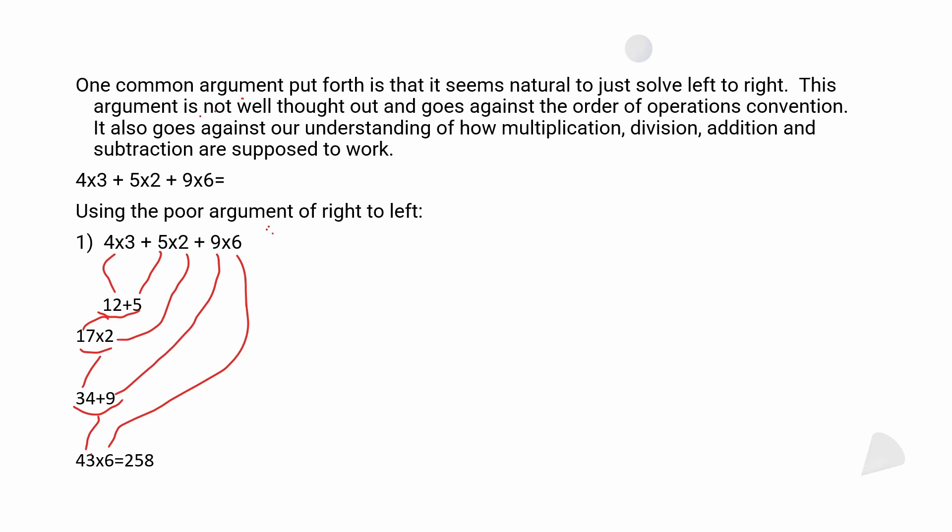If you look at the example 4 times 3 plus 5 times 2 plus 9 times 6, and you use the incorrect left-to-right approach, you'd go: 4 times 3 is 12, then incorrectly add the 5 to get 17, then 17 times 2 to get 34, then add 9 to get 43, then 43 times 6 to get 258. That is the wrong answer produced by ignoring order of operations.